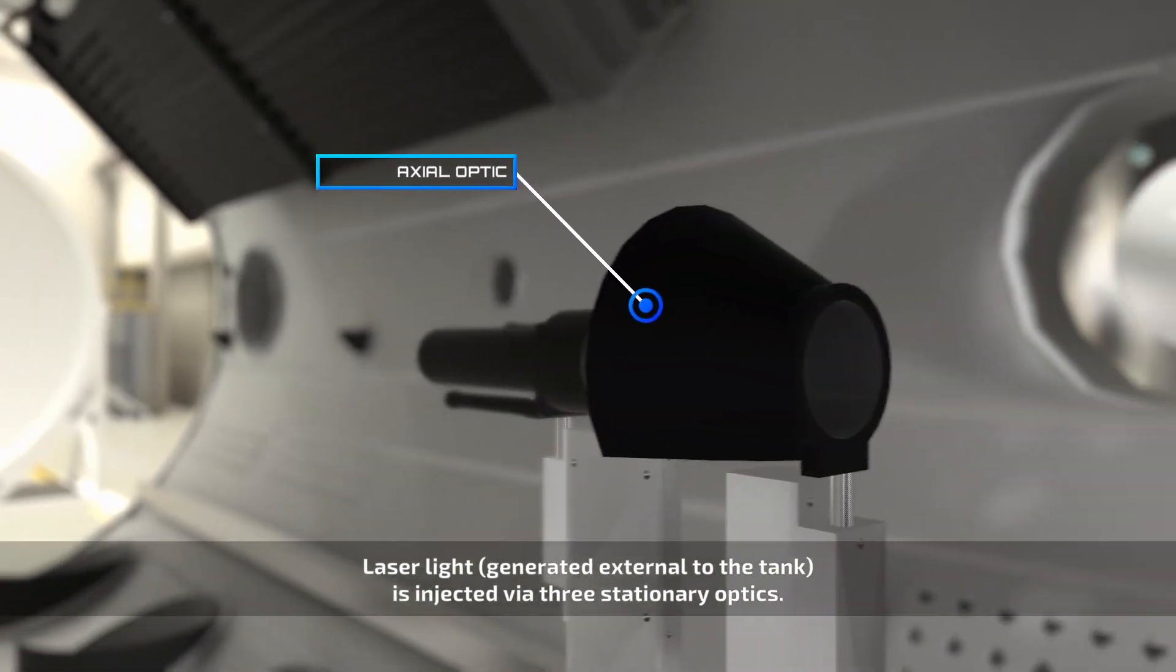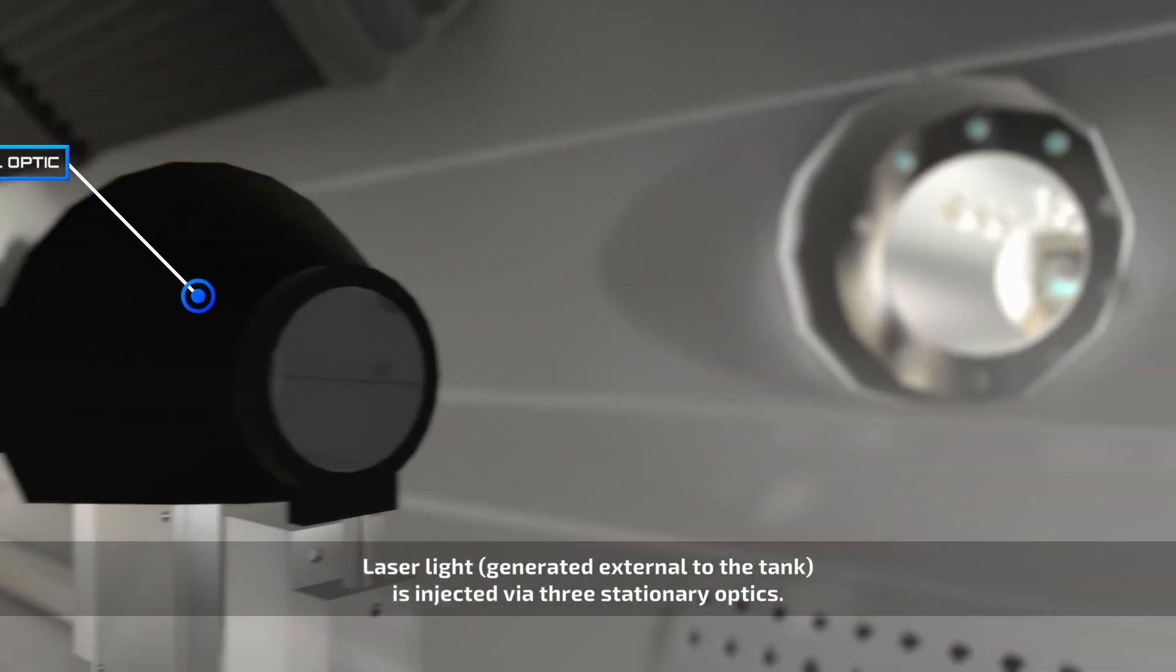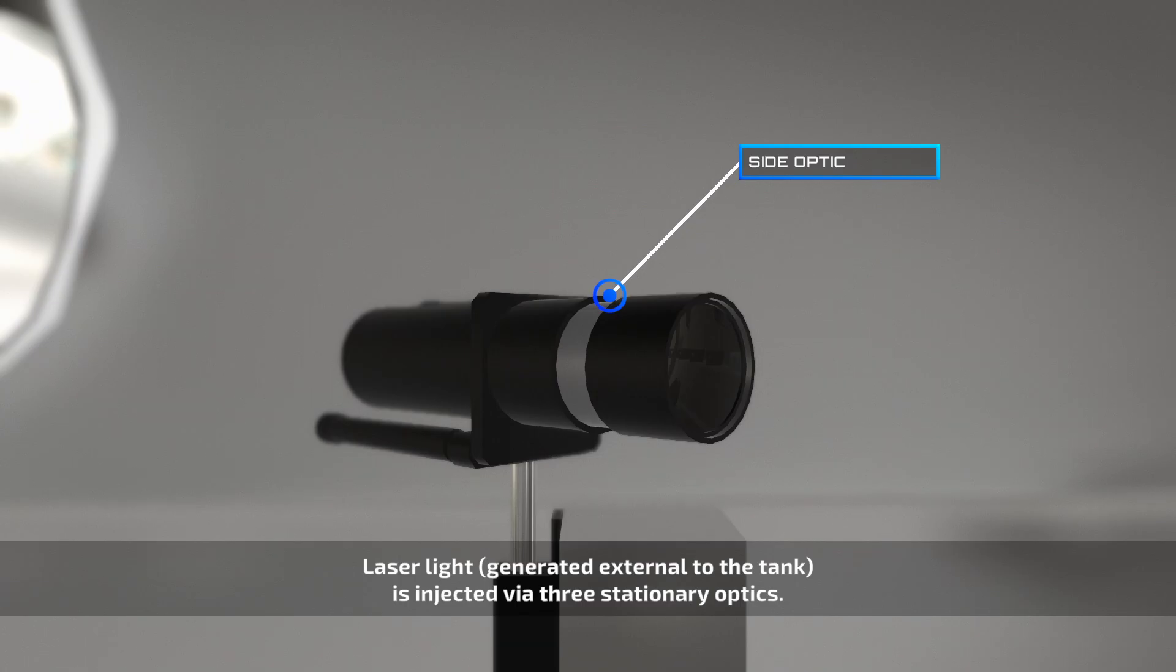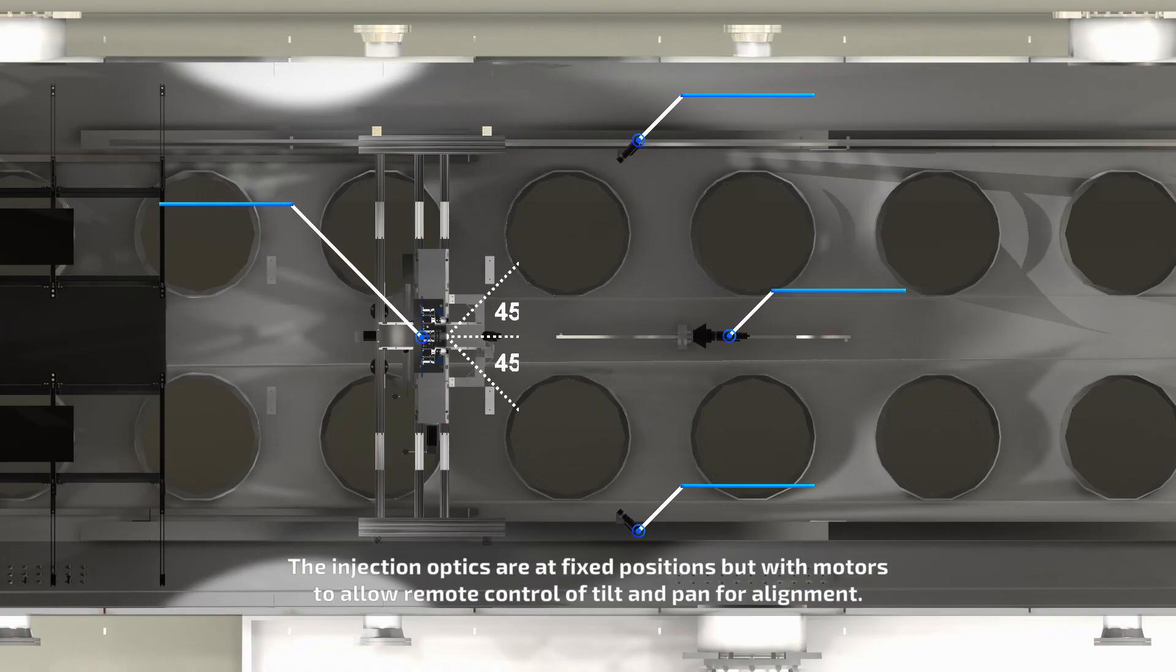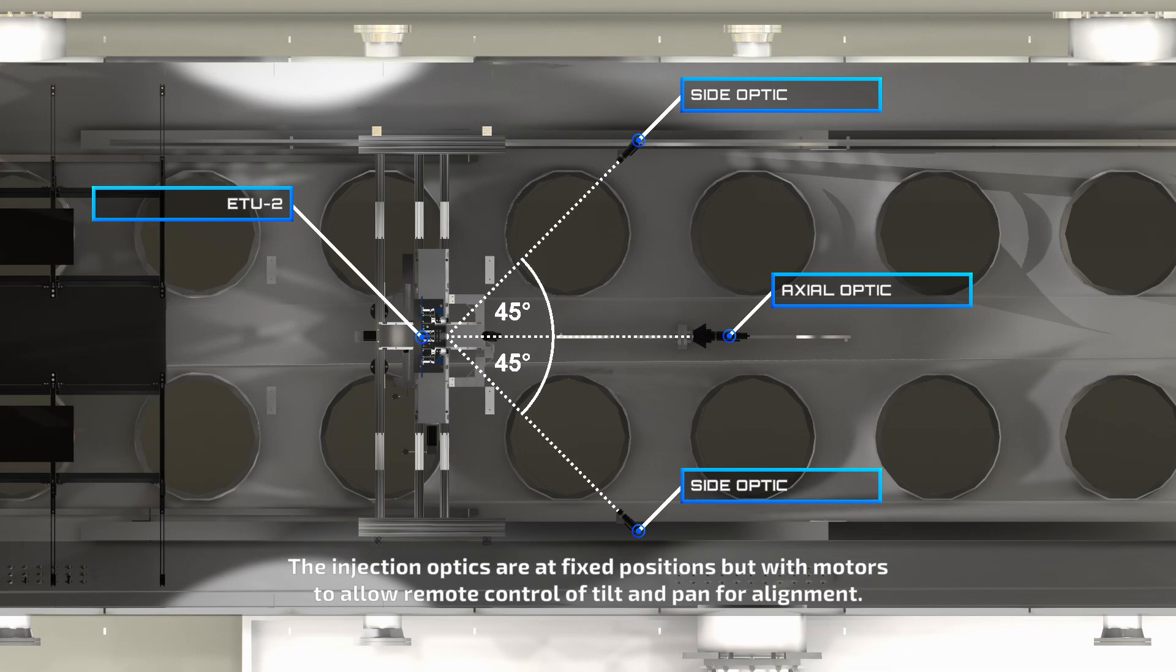Laser light, generated external to the tank, is injected via three stationary optics. The injection optics are at fixed positions, but with motors to allow remote control of tilt and pan for alignment.